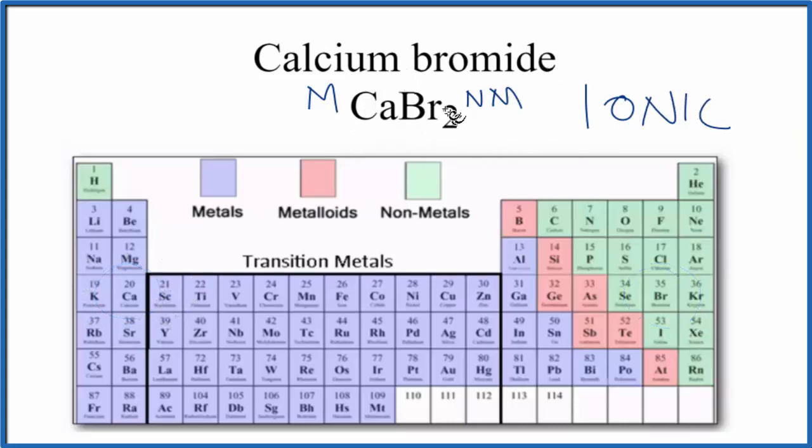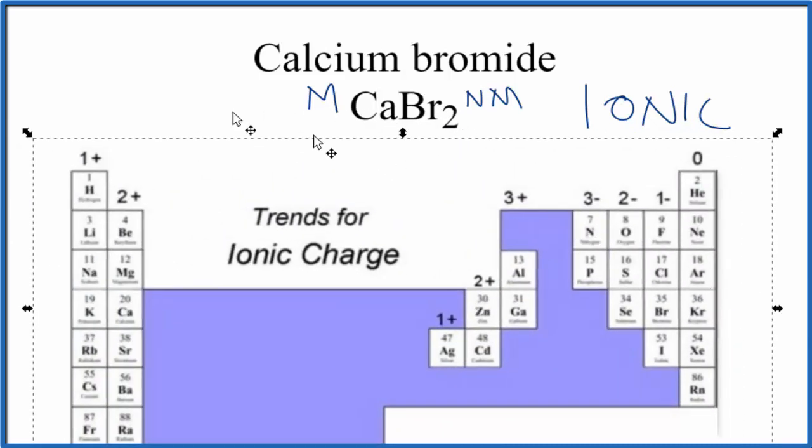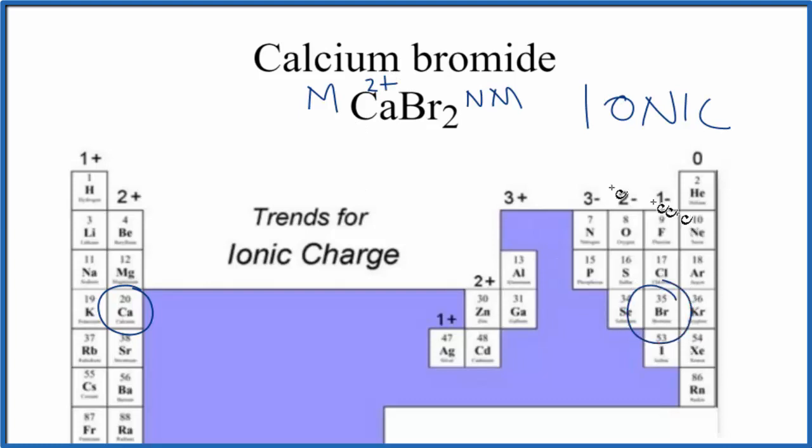You might be wondering why we need two bromine atoms. If we look at the periodic table, here we have the charges listed for each group. Again, calcium, that's in group 2. Calcium forms 2+ ions. Bromine forms 1- ions. We usually just write minus.